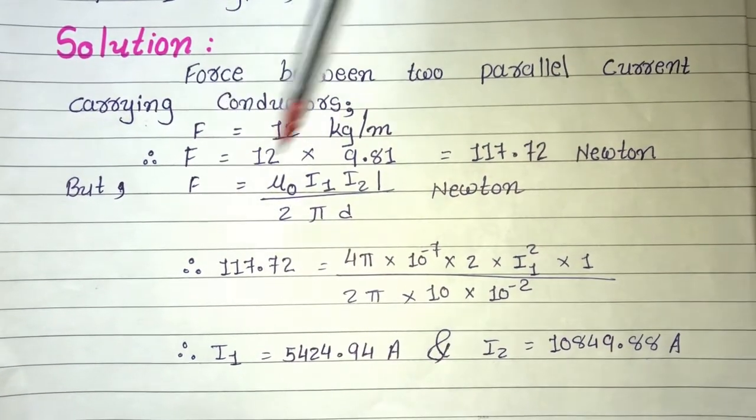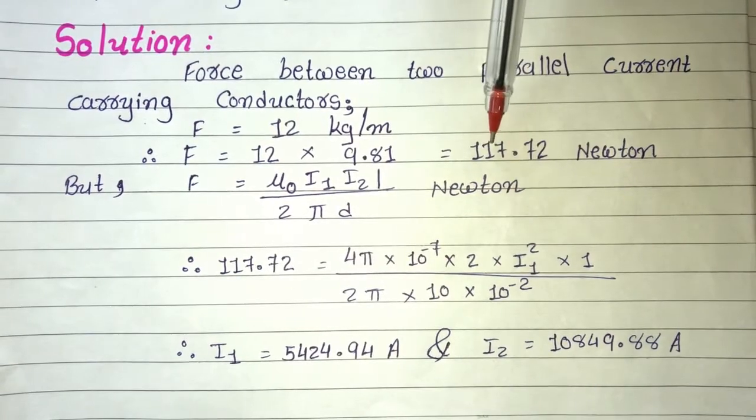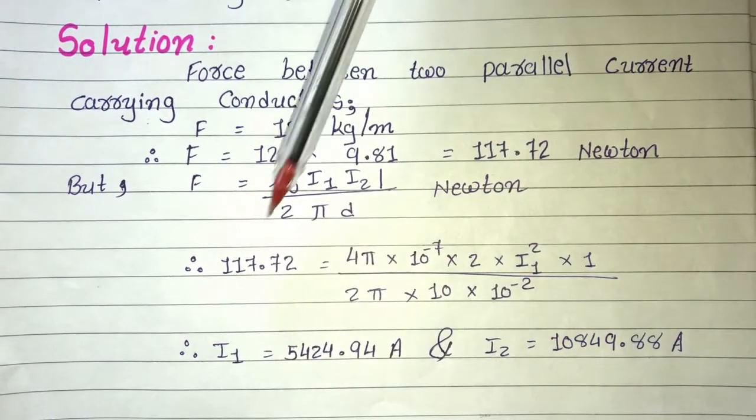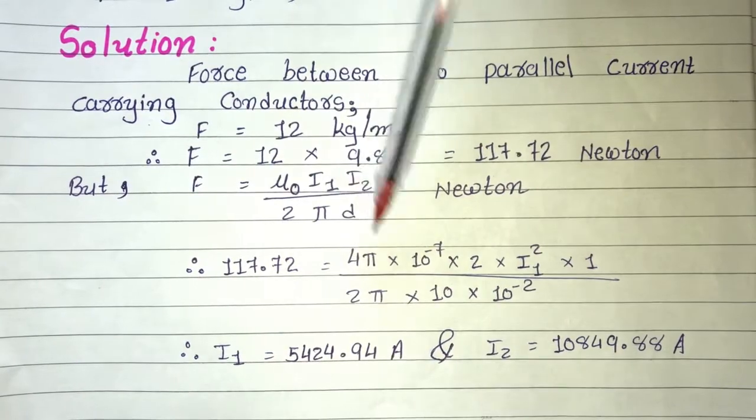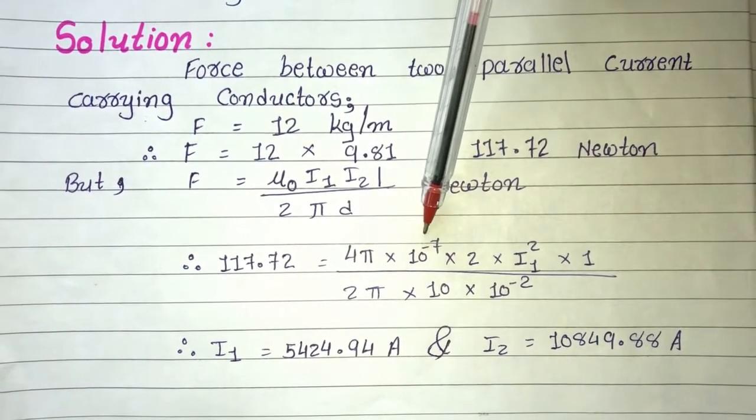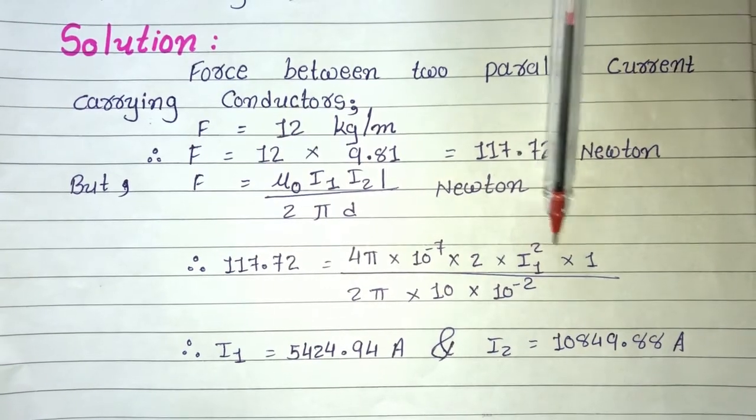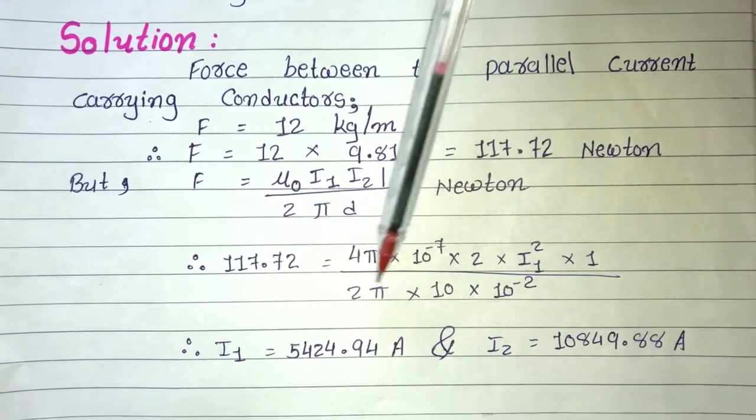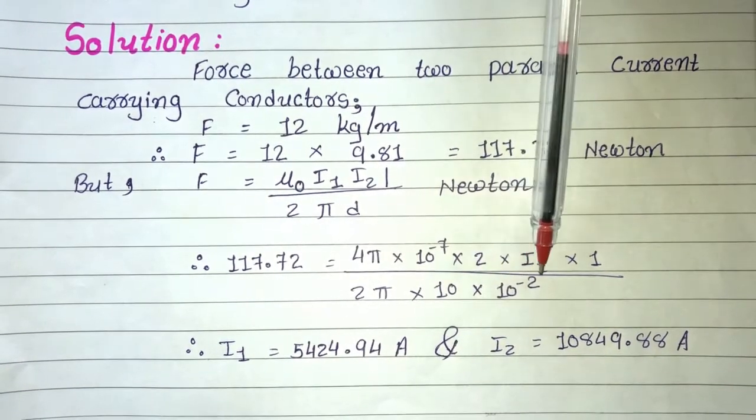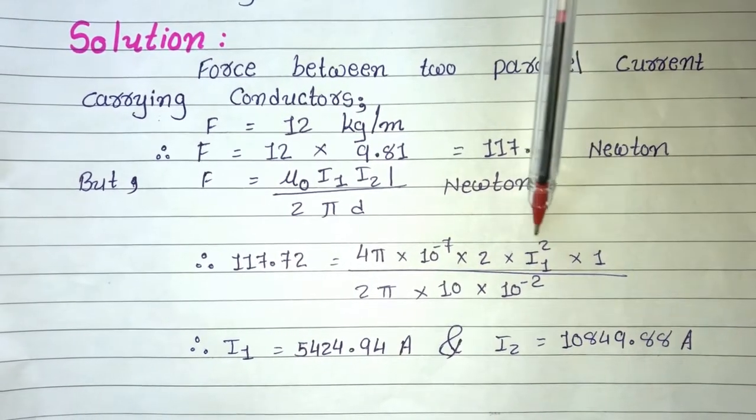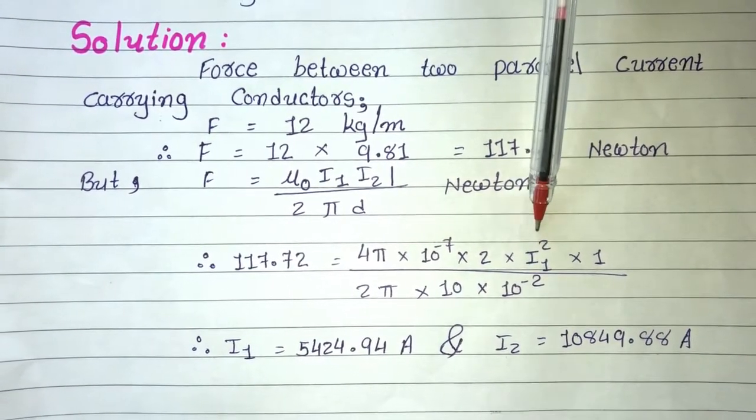Now F, the value of F you just found out, what did you get? 117.72 Newton. So, we put it there. 117.72 is equal to 4 pi into 10 raise to minus 7 into 2 into I1 square into 1 divided by 2 pi into 10 into 10 raise to minus 2. So here which value don't we have? I1 value is not there. Right?